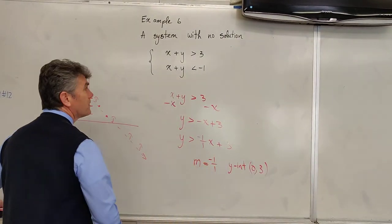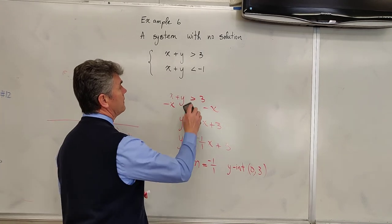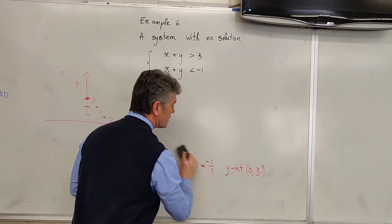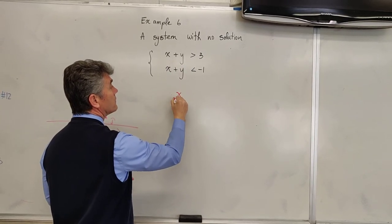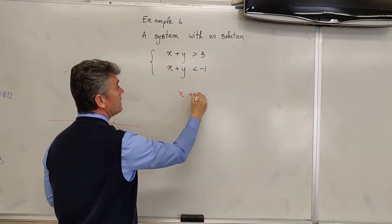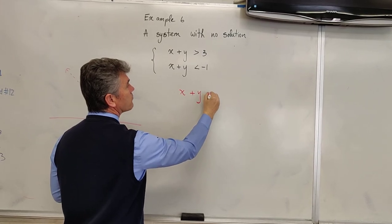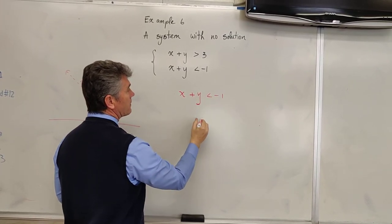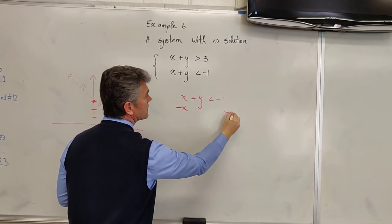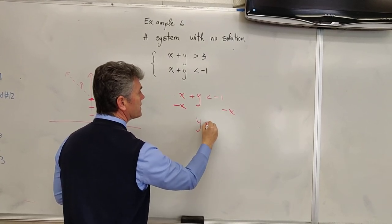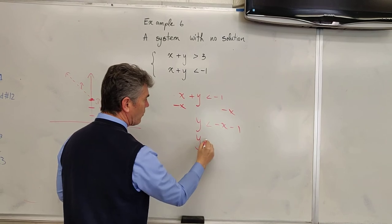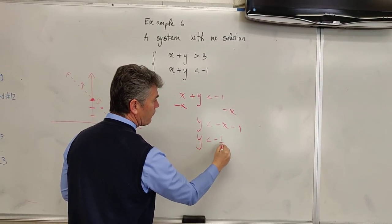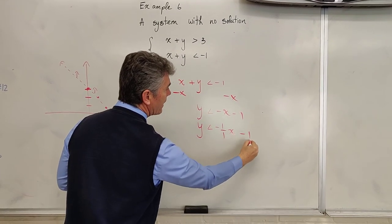So let me just not save time. Actually, we do the second problem here, the second inequality. We have x plus y is less than negative 1. So we have, subtract x from both sides, y is less than the opposite of x minus 1, or y is less than negative 1 over 1x minus 1.